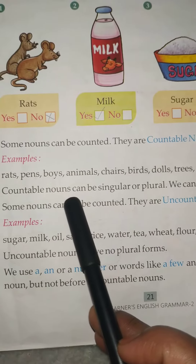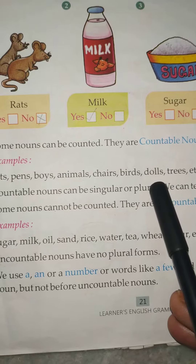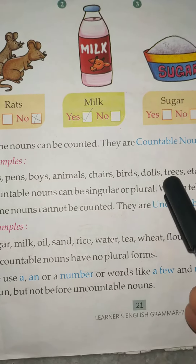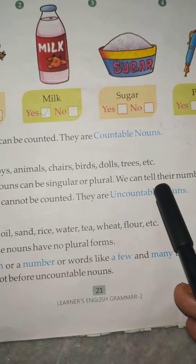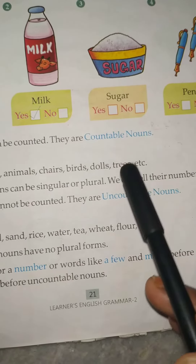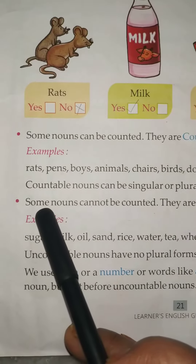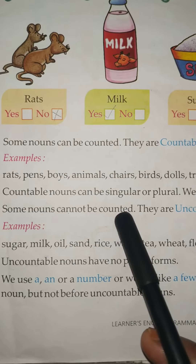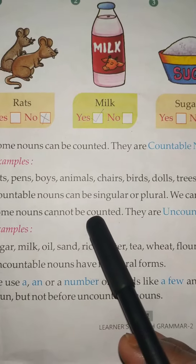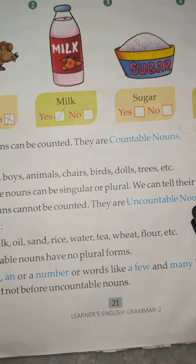Countable nouns can be singular or plural. We can tell their number.